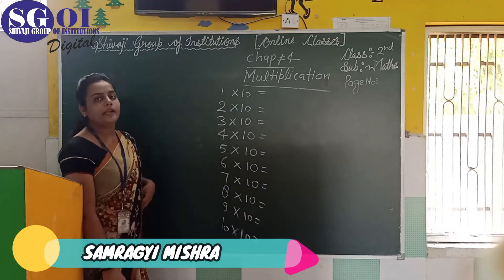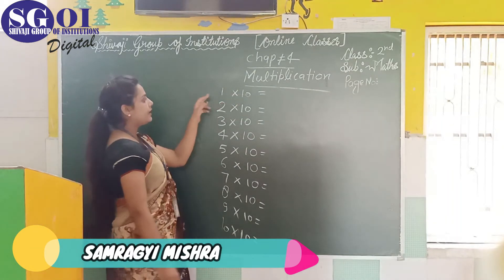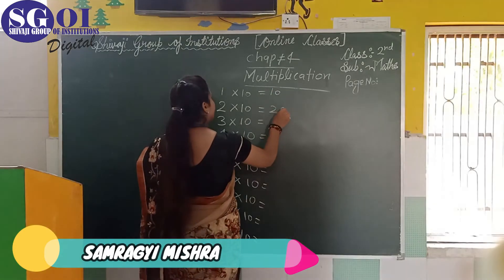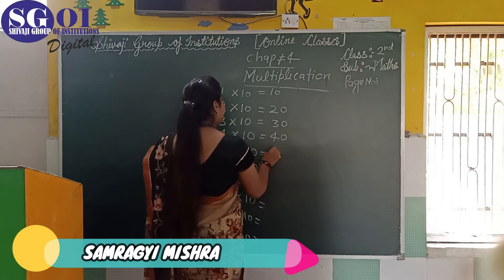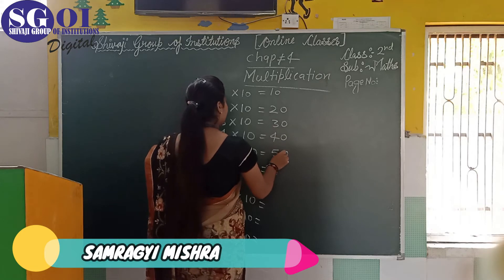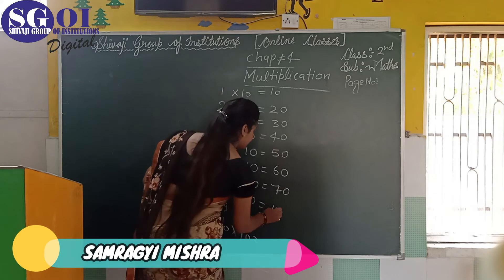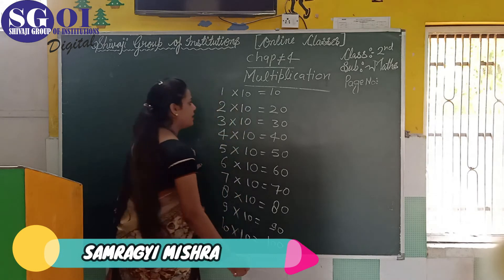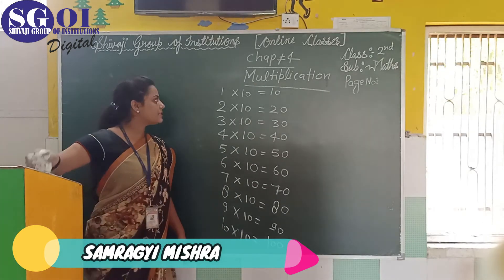Now we will solve it by reading the number of 10 for the multiplication. 10 times 1 is 10, 10 times 2 is 20, 10 times 3 is 30, 10 times 4 is 40, 10 times 5 is 50, 10 times 6 is 60, 10 times 7 is 70, 10 times 8 is 80, 10 times 9 is 90, 10 times 10 is 100. That was a short review of your previous class.